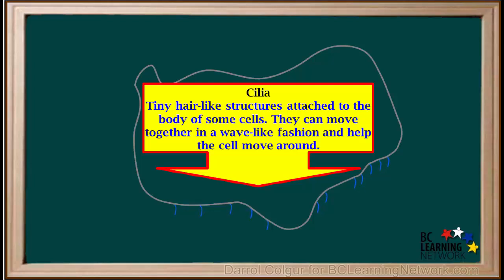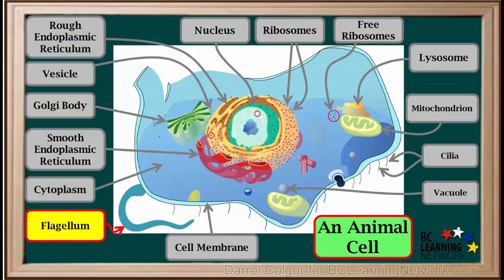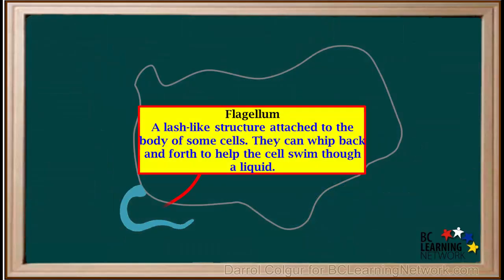Cilia can move together in a wave-like fashion and help the cell move around. Their movement can also be used to push materials past the cell. For example, cilia on cells on the surface of nasal passages will push mucus throughout the passages. A flagellum is a lash-like structure attached to the surface of some animal cells. Flagella are much larger than cilia, and there is usually a small number of these in one particular cell. They can whip back and forth to help the cell swim through a liquid.